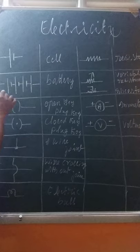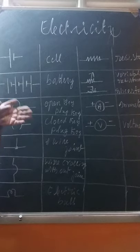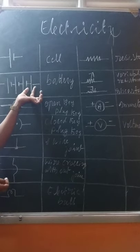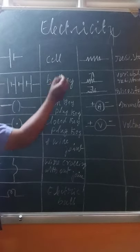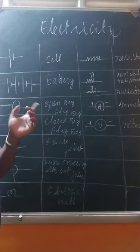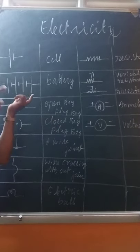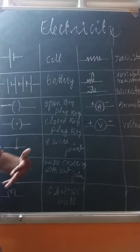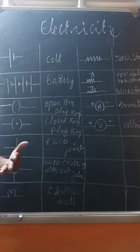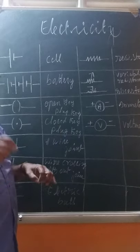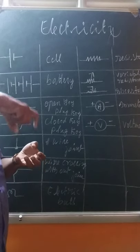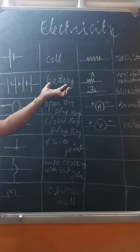If there is a combination of cells — more than one — for example three cells together, that is called a battery or combination of cells. A battery has more number of cells. You have seen this in vehicles — the accumulated battery uses different cells. So that is called a battery.